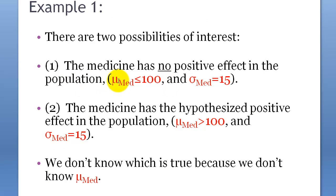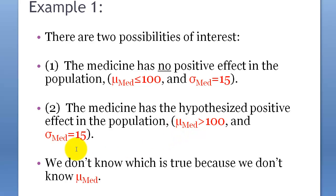Using mathematical notation: the first possibility — no effect — is mu_med ≤ 100 and sigma_med = 15. The second — positive effect — is mu_med > 100 and sigma_med = 15. We don't know which is true, but we would like to find out: no effect or positive effect.